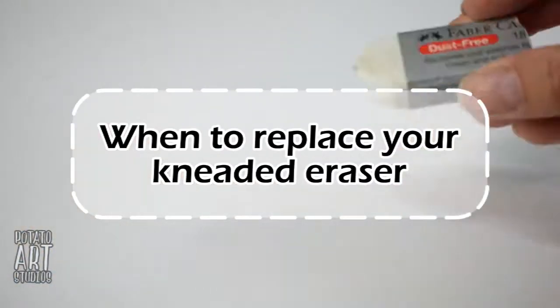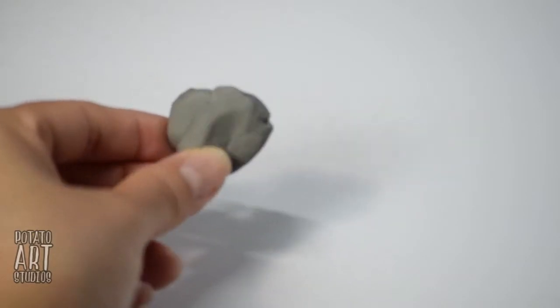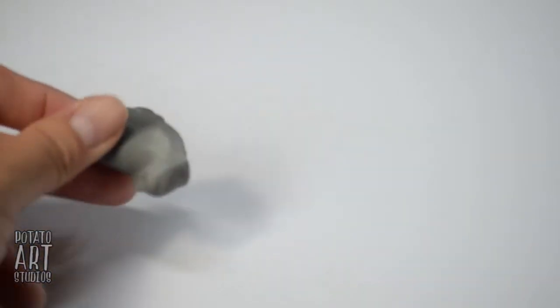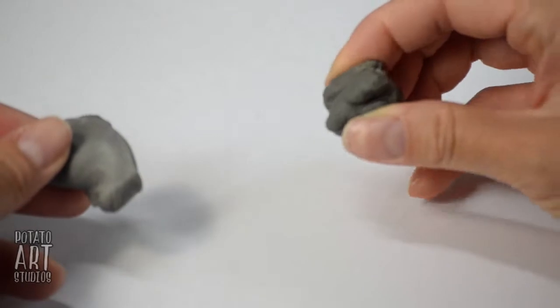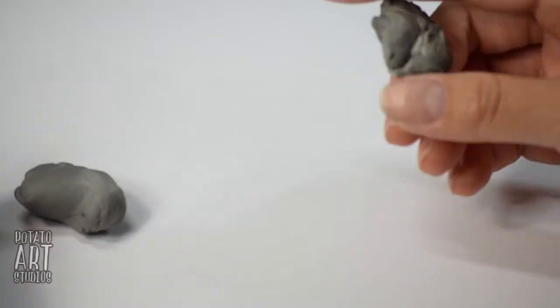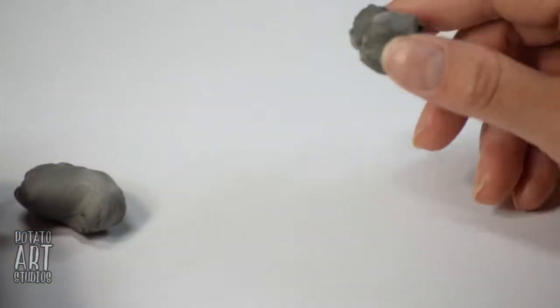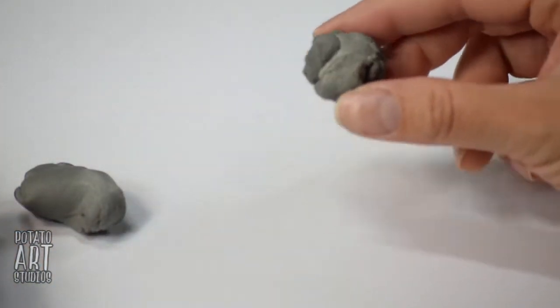One question you might have is, how do you know when your eraser is used up? Because the normal eraser basically gets smaller over time as you use it. With the kneaded eraser, how do you know when you need a new one? And so I have a new eraser. This one I just opened up a couple days ago. So it's very soft and pliable. And this is a used eraser. So this eraser is really firm and it's a lot less elastic than the new eraser. So that's because it basically has a lot of gunk in it.